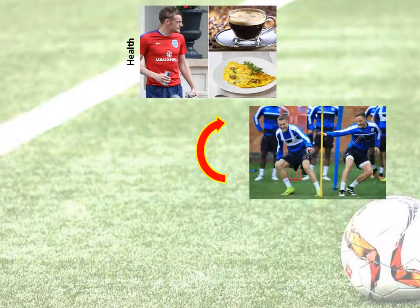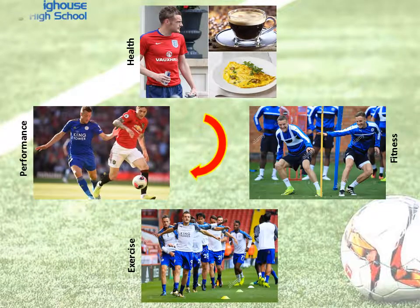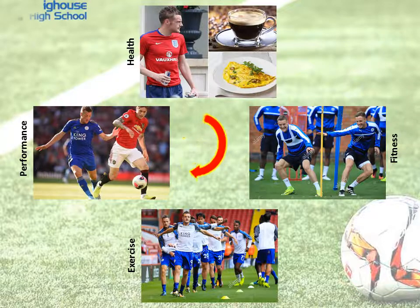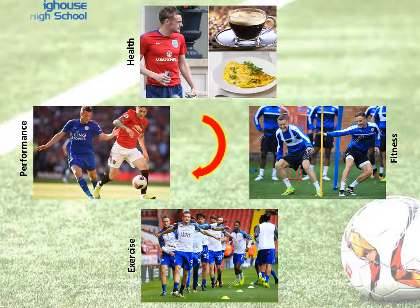I've used another example here — this is Jamie Vardy, England international footballer. Starting at the top, we look at Jamie Vardy's health — you'd like to consider that he puts his health first and foremost. By having a good level of health, he's then able to meet the demands of his environment, which is fitness. He regularly takes part in exercise in order to improve that fitness level, and ultimately putting those three things together leads to a good level of performance.